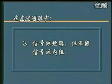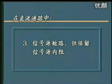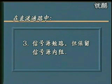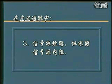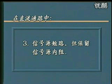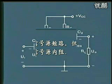在直流通路里面第三个原则，就是信号源应该是短路的。信号源短路表明这个时候只有直流电源对电路产生作用。但特别要注意，要保留信号源的内阻，因为在一些电路里面，信号源的内阻会影响放大电路的直流通路，影响放大电路的静态工作点。所以我们在画直流通路的时候，要遵循这三个原则：电容相当于开路，电感相当于短路，信号源短路但保留内阻。